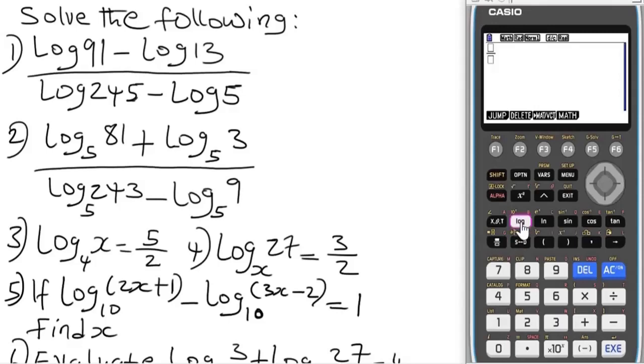We have log 91 minus log 13 over log 245 minus log 5. Press equals and we get 0.5. Now to get the anti-log of this problem, all you have to do is press shift then the log button. That's what we're going to press to find the anti-log. So anti-log of 0.5, press equals.